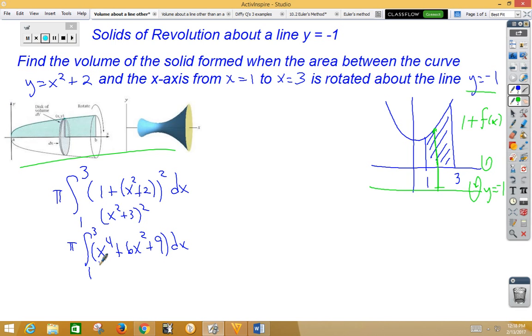So if we integrate, we get π times (x⁵/5 + 2x³ + 9x) evaluated from 1 to 3.